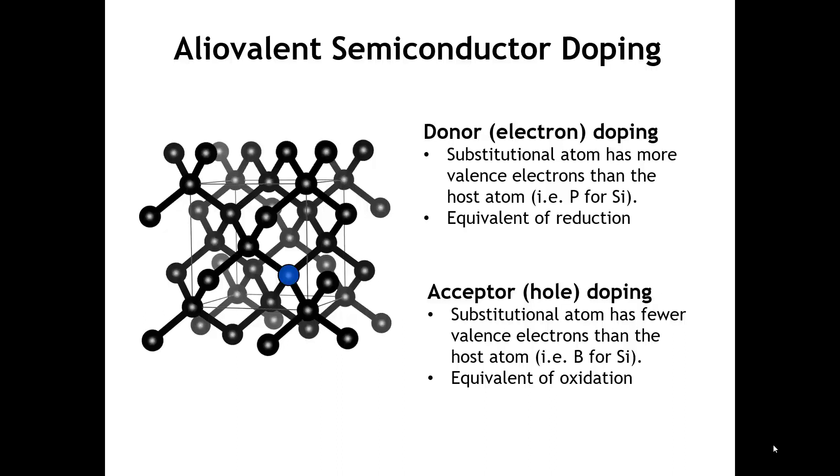The opposite kind of doping is when we substitute an atom that has fewer valence electrons than silicon, for example, boron or aluminum. In that case, we have a missing electron at the substitutional site, and that can effectively take an electron away from the rest of the lattice. We call that missing electron a hole. This acceptor doping is alternatively called hole doping, and the donor doping is called electron doping. Notice that acceptor doping is the equivalent of oxidizing the host lattice, because it's going to lose one electron to the substituted ion.